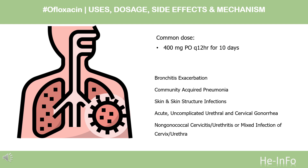Acute uncomplicated urethral and cervical gonorrhea: No longer recommended for gonorrhea owing to widespread resistance in the U.S. 400 mg, PO Q12HR, for 10 to 14 days; 300 mg, PO Q12HR, for 7 days. Acute pelvic inflammatory disease: 400 mg, PO Q12HR, for 10 to 14 days.